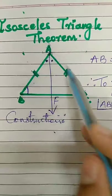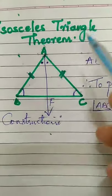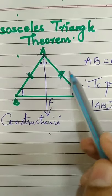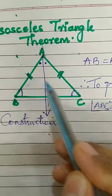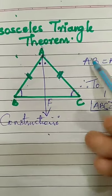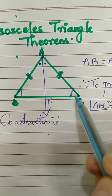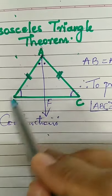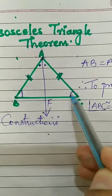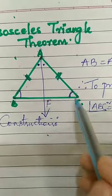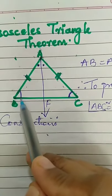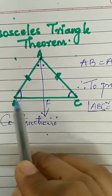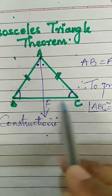If you have an isosceles triangle, according to the property, if two sides of a triangle are congruent, then the angles opposite to them are also congruent. AB is congruent to AC, so the angles opposite to the congruent sides — AB's opposite angle is angle C, and AC's opposite angle is angle B.